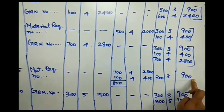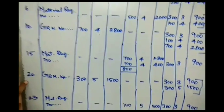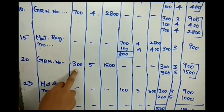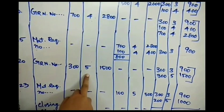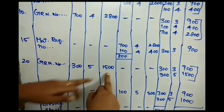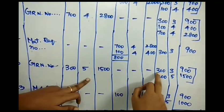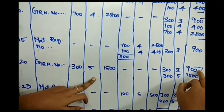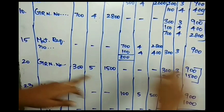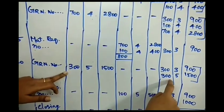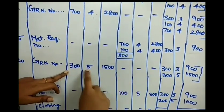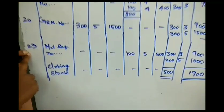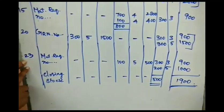On January 20th, a purchase of 300 units at ₹5 per unit totalling ₹1500 is made. The balance is now recorded in two separate lots: the earlier lot of 300 units at ₹3 = ₹900, and the new purchase of 300 units at ₹5 = ₹1500.